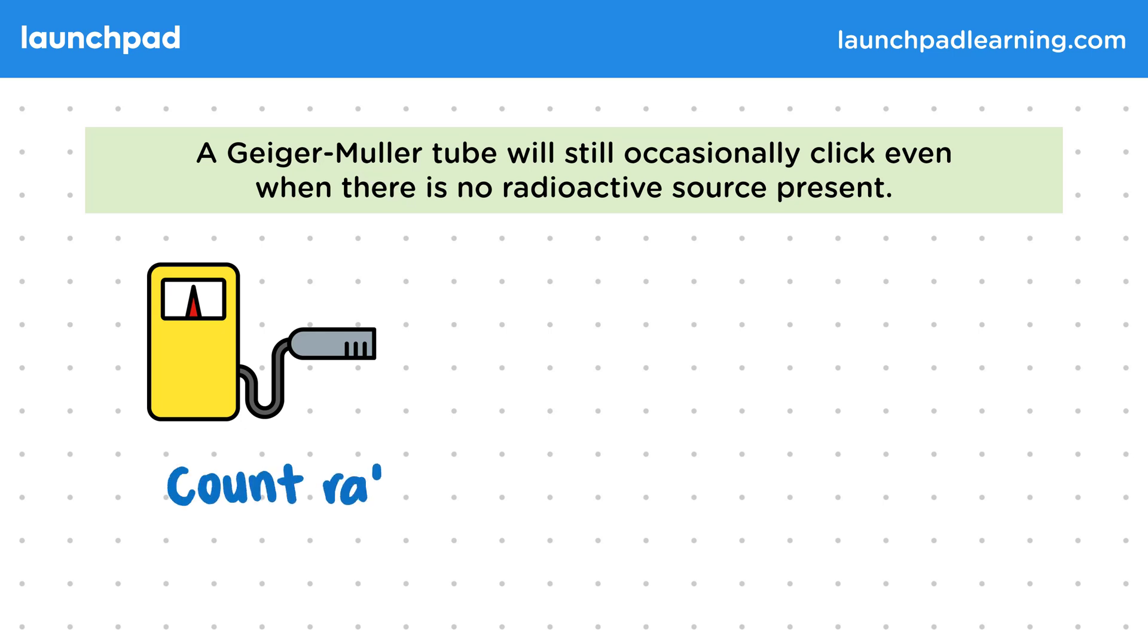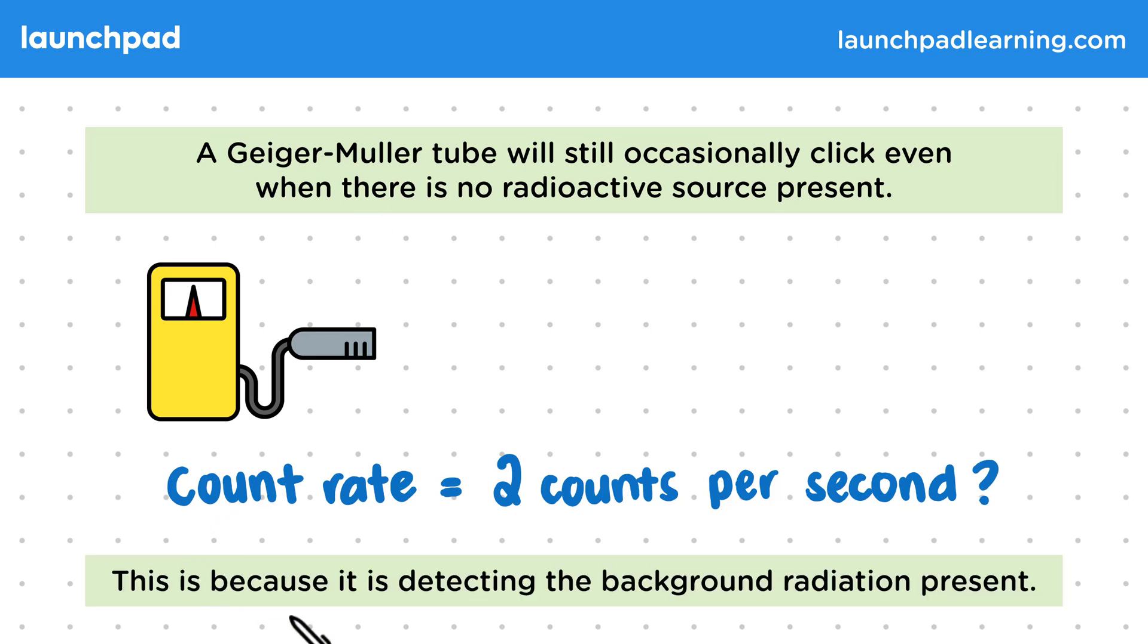It would be normal to detect say a count rate of two counts per second. This is because it's detecting the background radiation present.